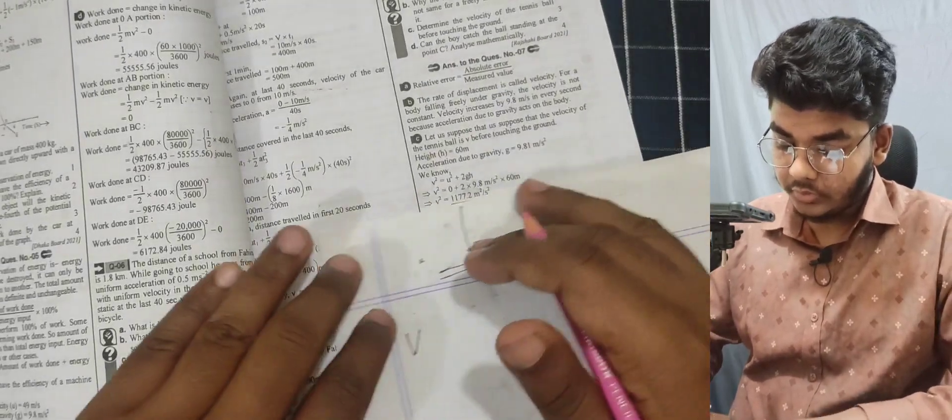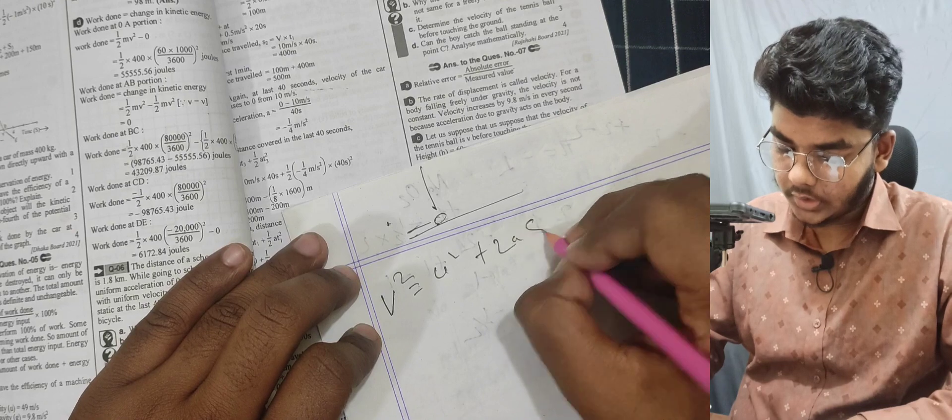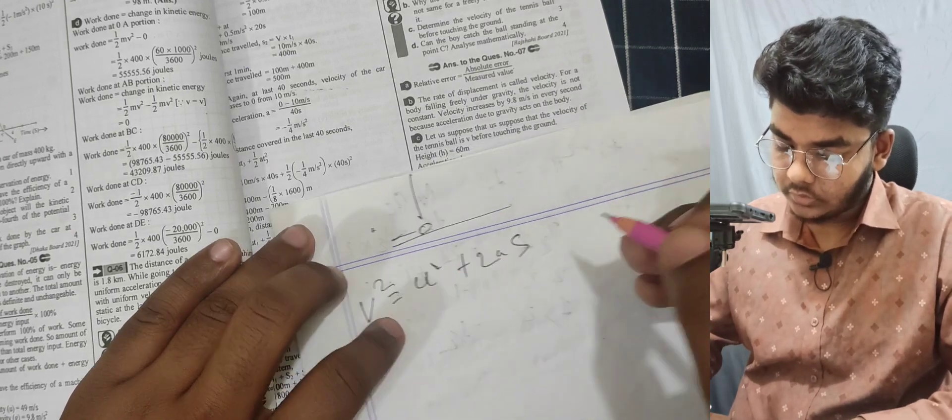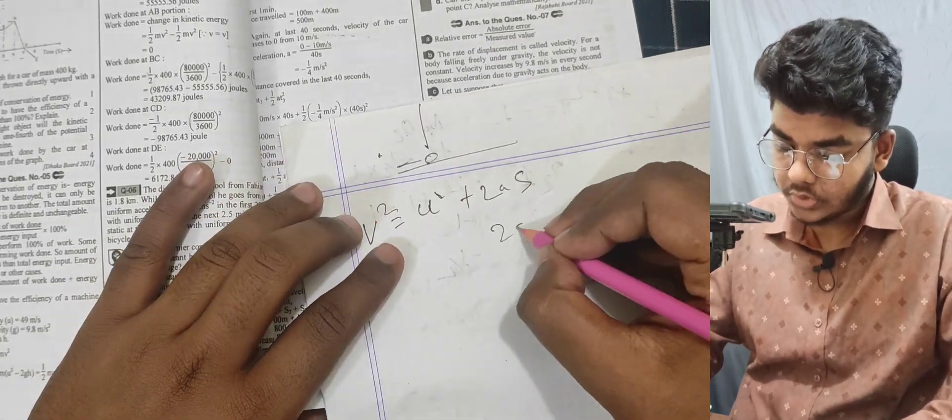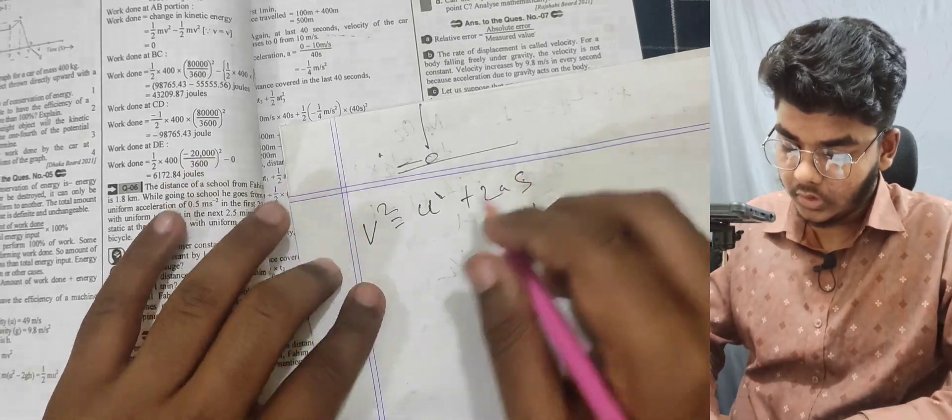We use the equation: velocity squared equals v² = u² + 2as. For height, this becomes v² = 2gh, where height is the distance.